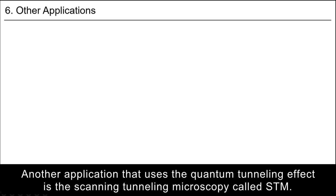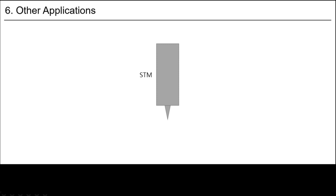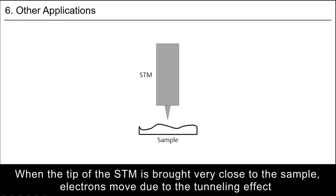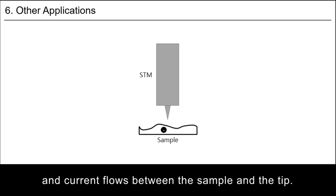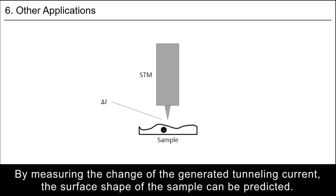Another application that uses the quantum tunneling effect is the scanning tunneling microscopy called STM. When the tip of the STM is brought very close to the sample, electrons move due to the tunneling effect and current flows between the sample and the tip. By measuring the change of degenerated tunneling current, the surface shape of the sample can be predicted.